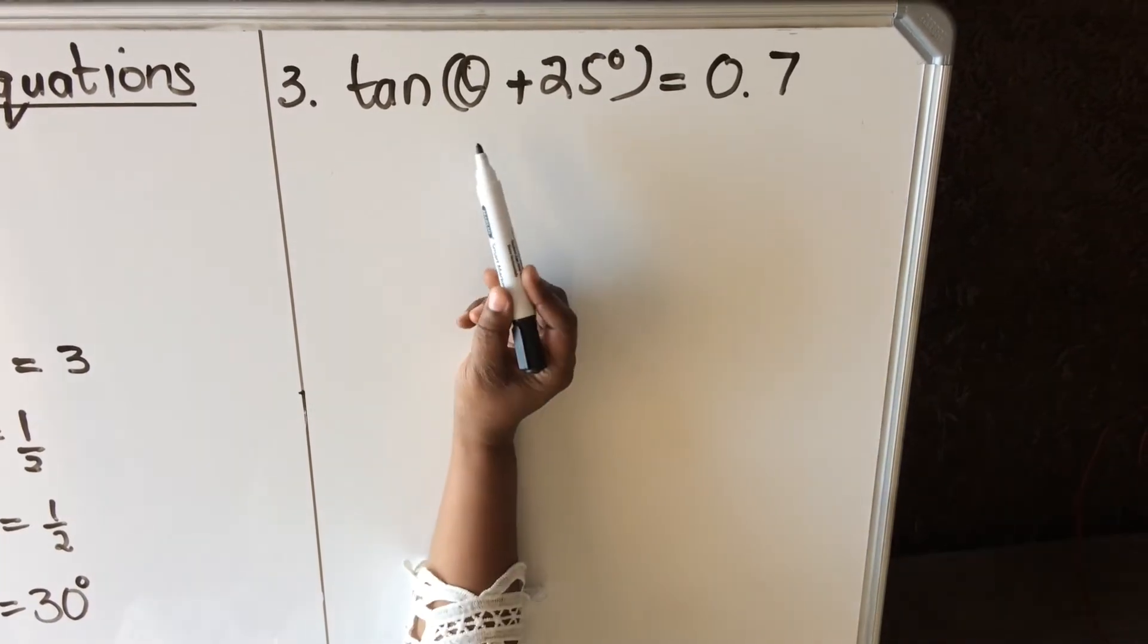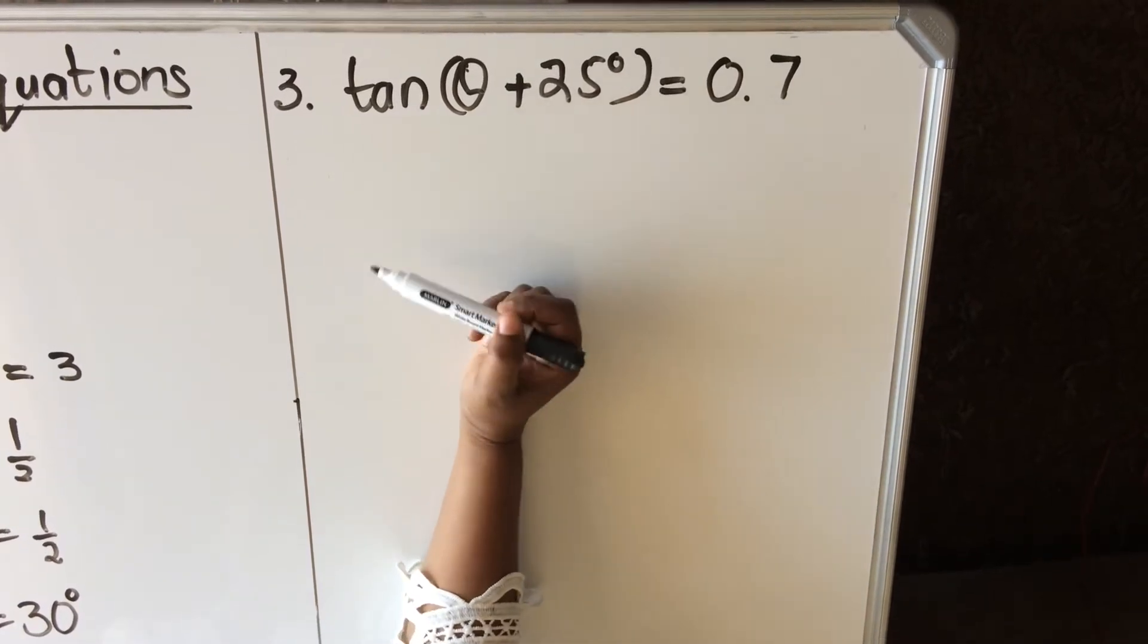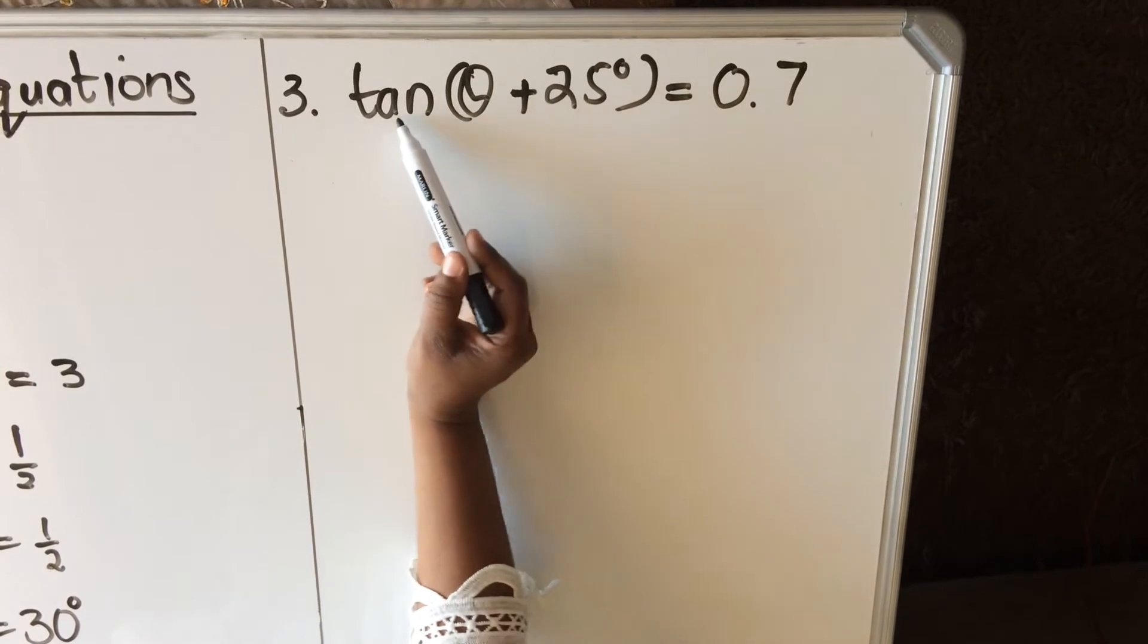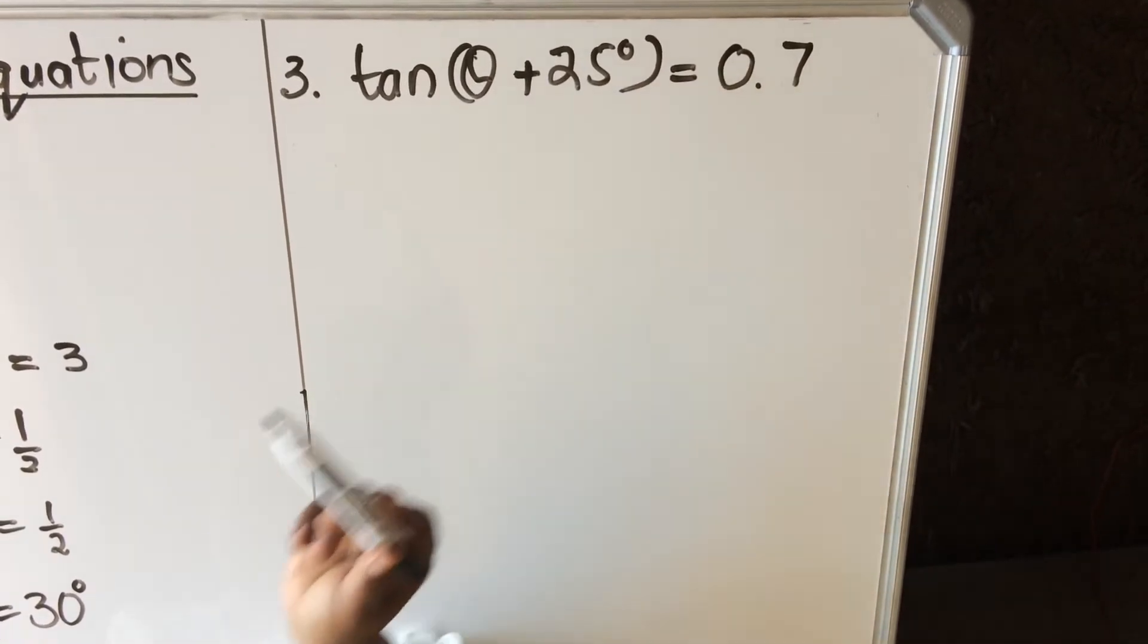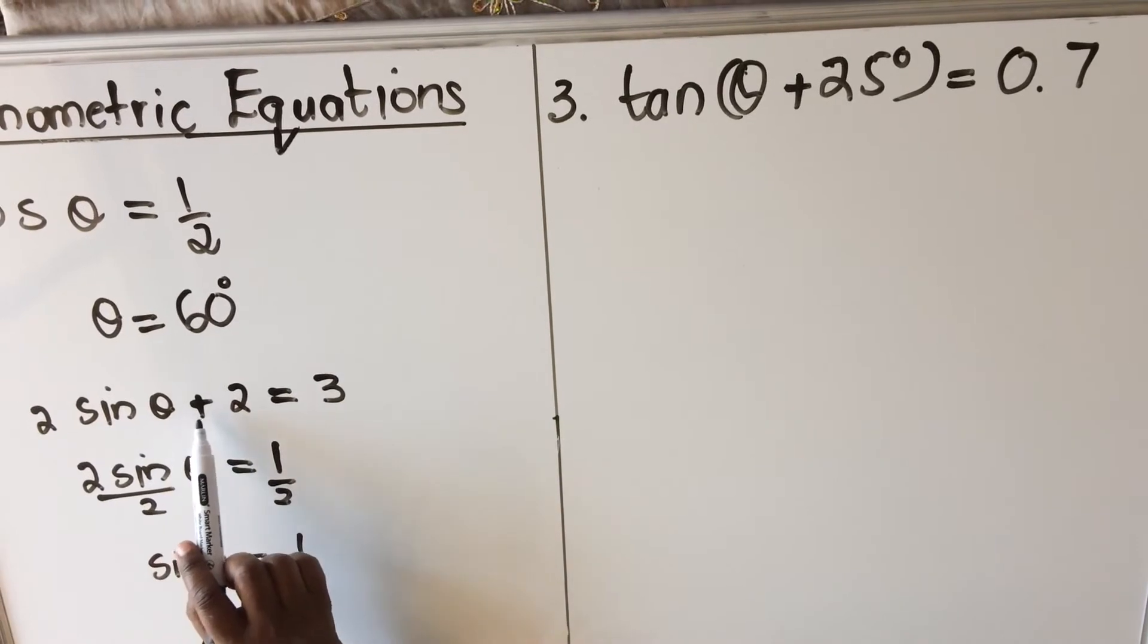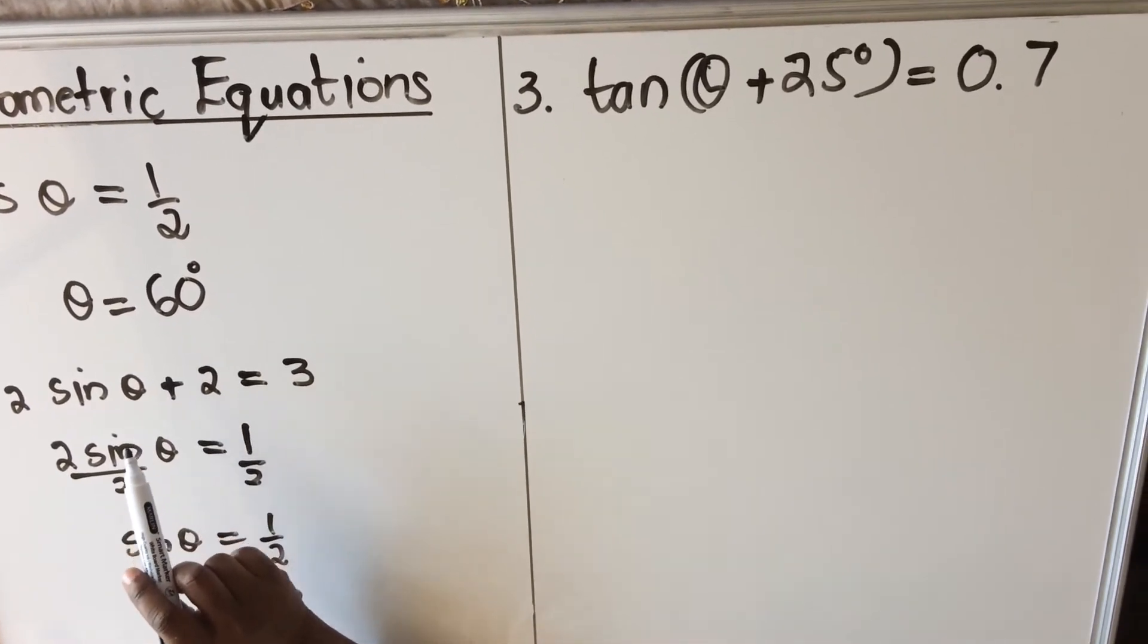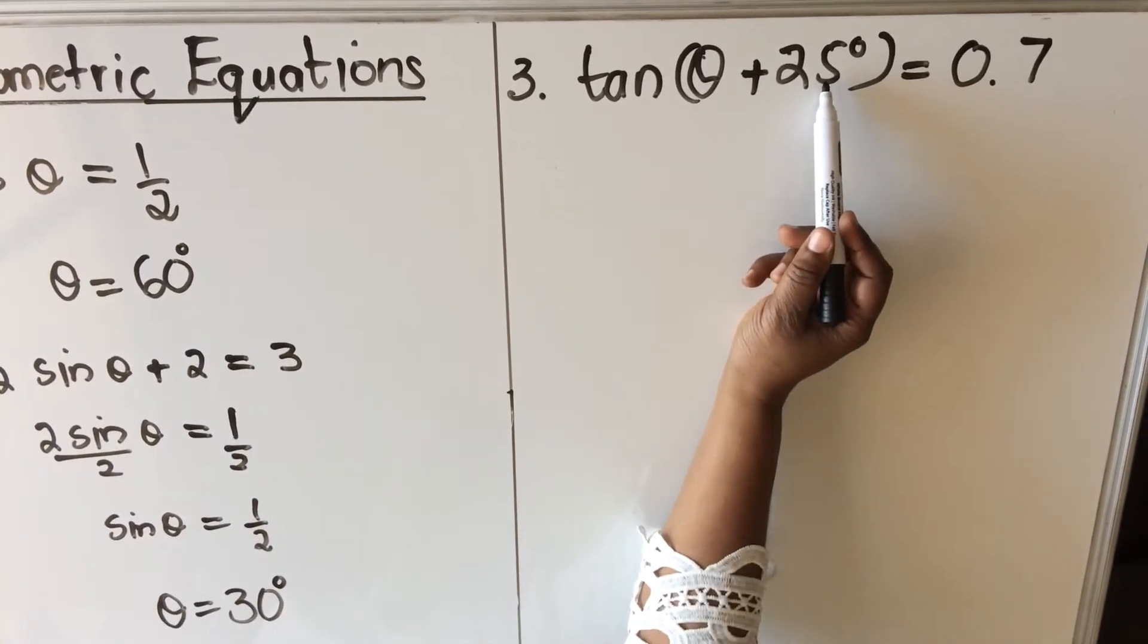With the third one, you have to start by noticing what is your angle. My angle is not theta, my angle is not 25, my angle is the whole bracket thing: theta plus 25. That's why they've put brackets around it to show you that your angle is theta plus 25. When you look at number two, you had 2 sin theta plus 2, your angle was theta, not theta plus 2. They didn't put brackets around it, so that's how you see the difference.